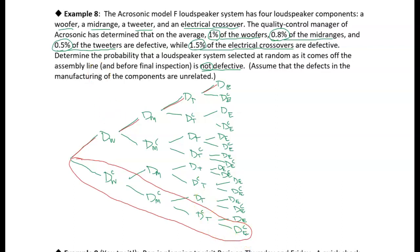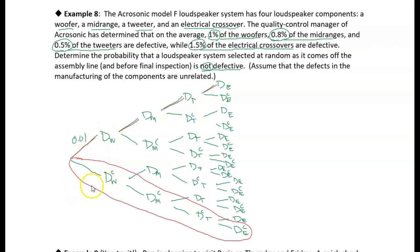We want to know what's the probability of that happening. I haven't put probabilities on the tree yet. We know that 1% of the woofers are defective, so the probability of a defective woofer is 0.01. The probability of not having a defective woofer is 1 minus that — 0.99, a 99% chance.